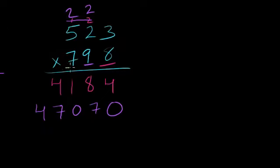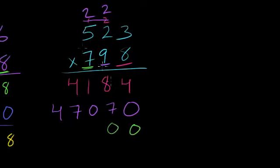Then finally, we have to multiply the 7, which is really a 700 times 523. When it was a 90, we were dealing with the tens place, we put a 0 there. Now that we're dealing with something in the hundreds, we're going to put two 0's there.